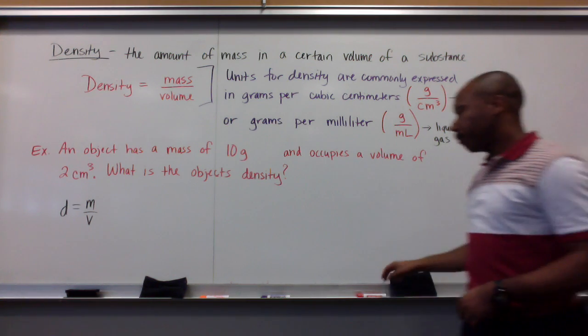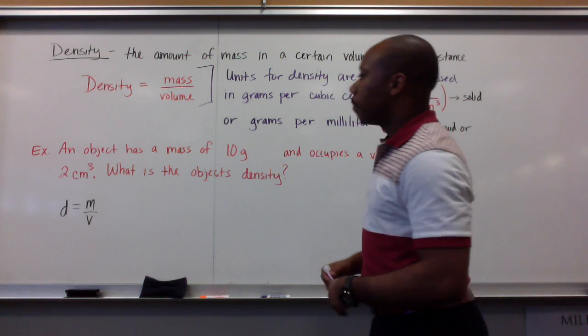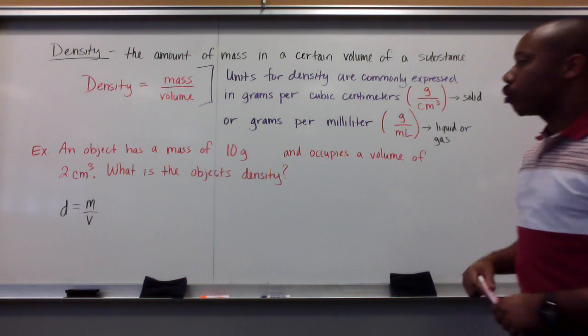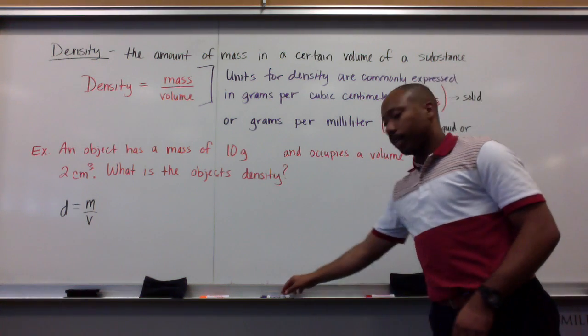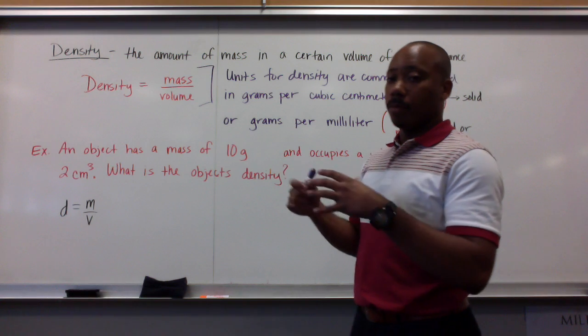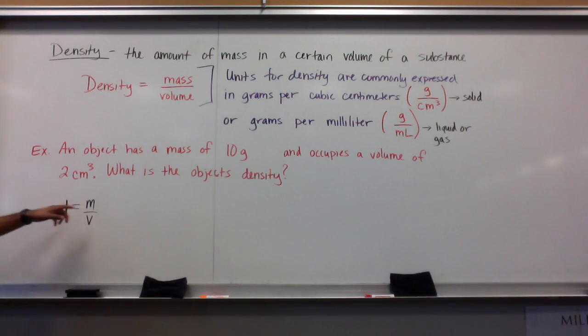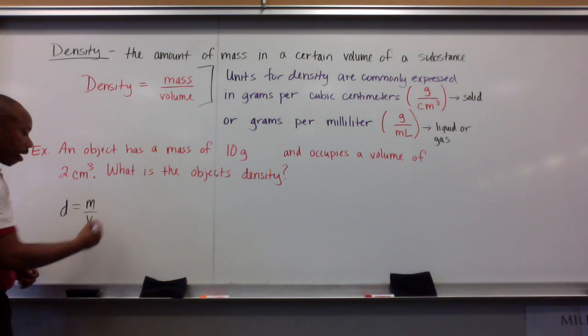Here's an example problem for solving a problem with density. It's pretty simple. An object has a mass of 10 grams and occupies a volume of two cubic centimeters. What is the object's density? Now, we know the relationship within the density scope is that density is equal to the mass divided by the volume. We're given mass in the problem. We're given volume. We can simplify from there.